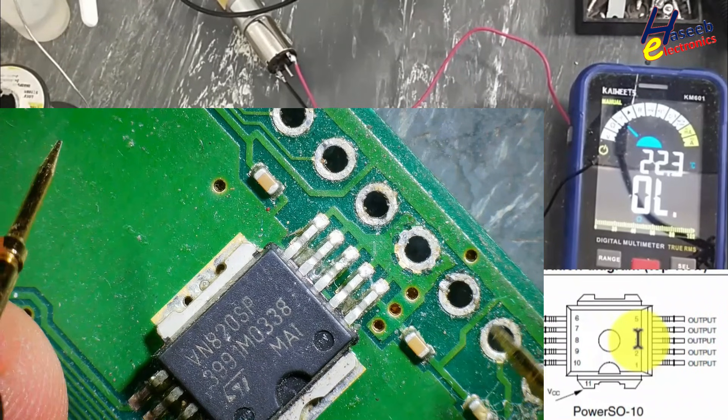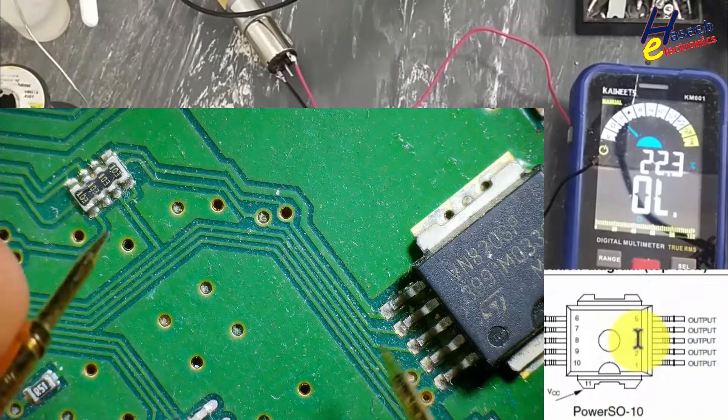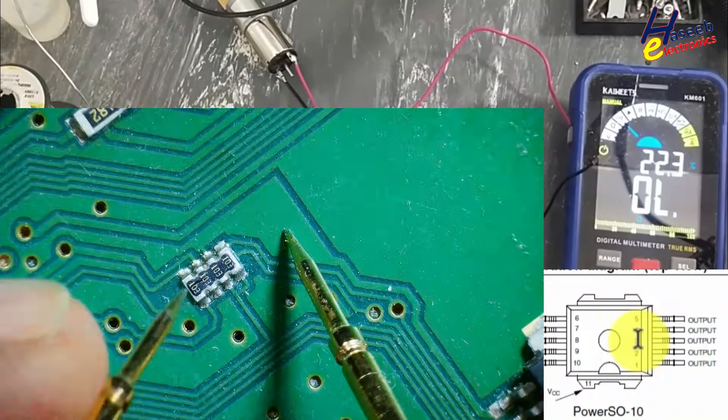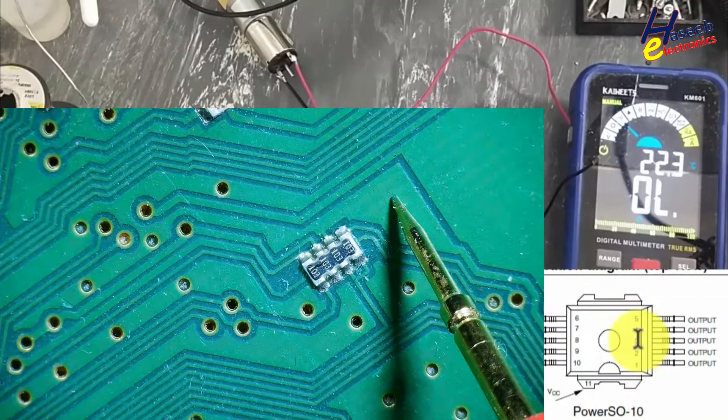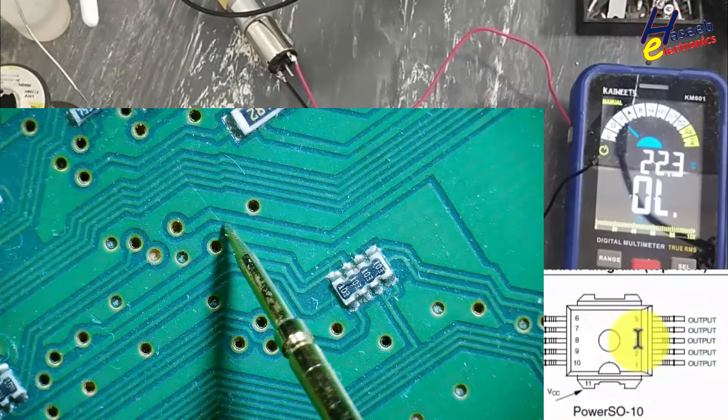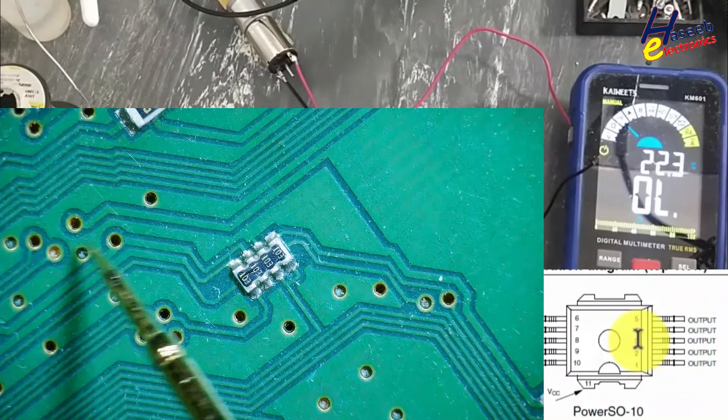We will connect the load here. If you see this side, it is connected to this track and then it is connected to this main ground track.